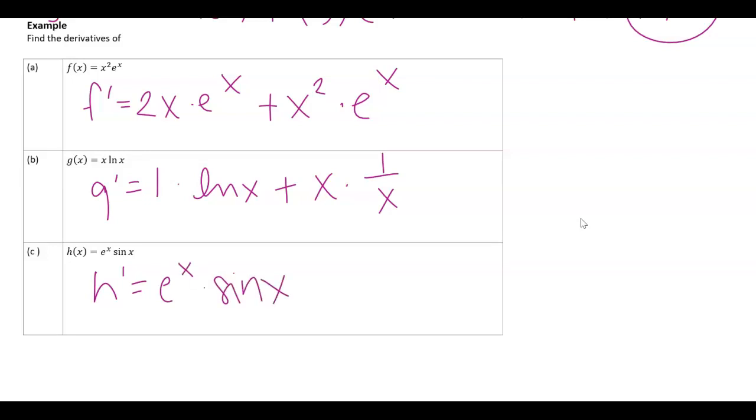Let's find h prime. Derivative of the first is just e to the x times the second, leave it as sine of x, plus the first times the derivative of the second. Now sometimes you're going to be able to do some factoring, do some simplifying. Like on this first one I notice a common factor of x and e to the x. I'm left with 2 plus x.